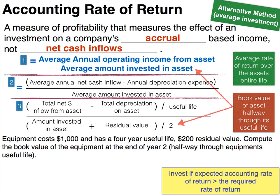A common question is: why are we adding residual value in the third form's denominator when we typically subtract it? Remember, we're looking for the book value of the asset halfway through its useful life. Let's use an example to show why the formula is set up this way.